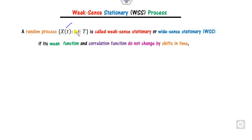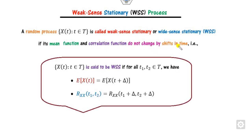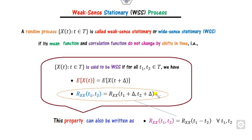Any random process x(t) is called weak sense stationary if the mean function as well as the correlation function are independent of time — that is, they do not change with a shift in time. Any process is said to be weak sense stationary if these two conditions are satisfied: the mean is constant, and the autocorrelation depends only on the time difference.